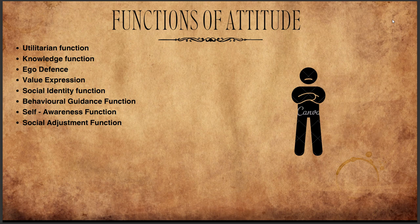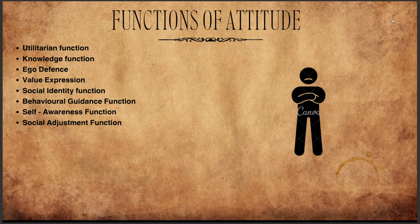Next is the ego defense function. It protects an individual's self-esteem and maintains a positive self-image by helping cope with anxiety and fear. Everyone wants to play like Virat Kohli or Rohit Sharma, but everyone cannot. Instead of accepting that truth, to protect our self-esteem we say we don't like cricket but are only interested in other intellectual activities — that is ego defense. Next is the value expressive function — it allows individuals to express their core values and beliefs. A civil servant may keep a zero corruption tolerance attitude, expressing commitment to integrity and the rule of law.